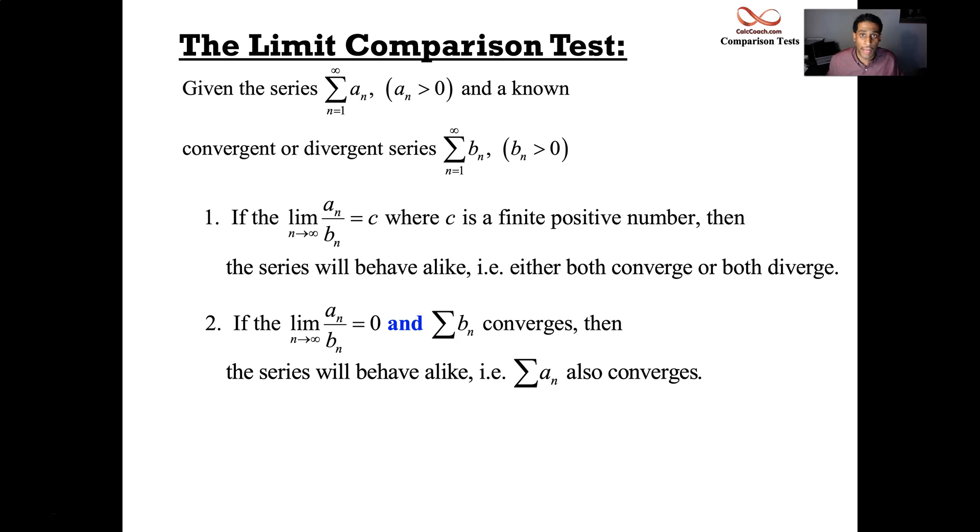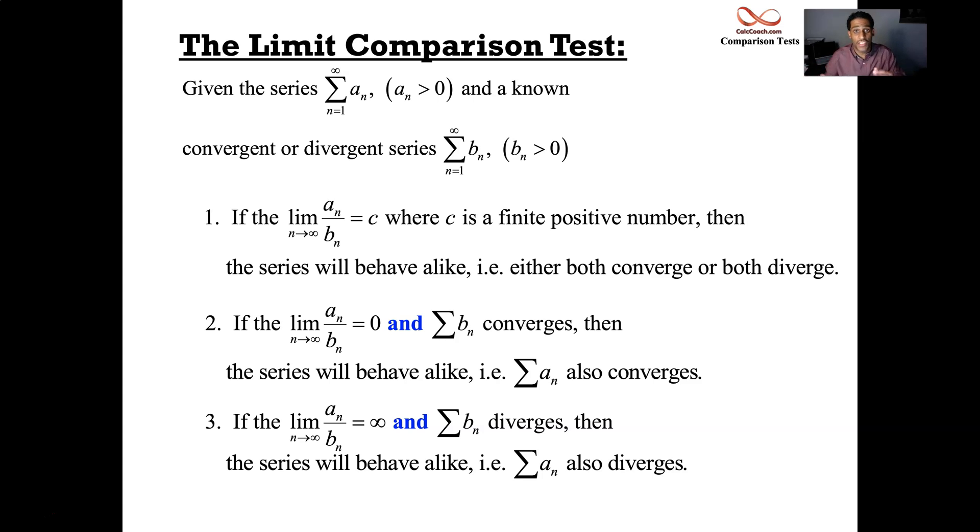And then the third option is if this limit of the sequences, the ratio of the sequences is infinite. You need to pair that up with the fact that your b sub n diverges for you to say that your a sub n is also divergent. So it's possible that you could be in a situation where you're not going to be able to use this test. If the limit is equal to zero but you have a divergent b sub n can't use this test. If the limit is equal to infinity but you have a convergent b sub n, you're not going to be able to use this test.